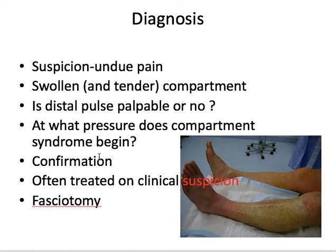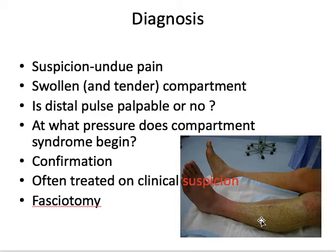Generally, if a limb is swollen and tender with undue pain, the pulse is not a physical sign you can depend on. At about 25 to 30 mmHg pressure, compartment syndrome sets in and tissue ischemia begins — there will be muscle necrosis if you don't treat soon. Confirmation can be done by measuring tissue pressures, but this is not available in most hospitals. So on clinical suspicion you must treat without delay by performing a fasciotomy: make two incisions on either side of the leg, divide the deep fascia, release the tissue pressure, and you can save the limb.